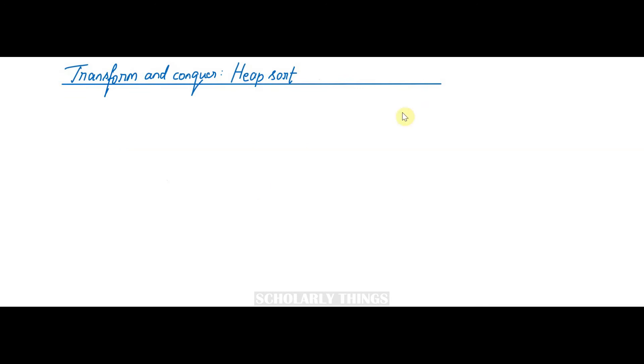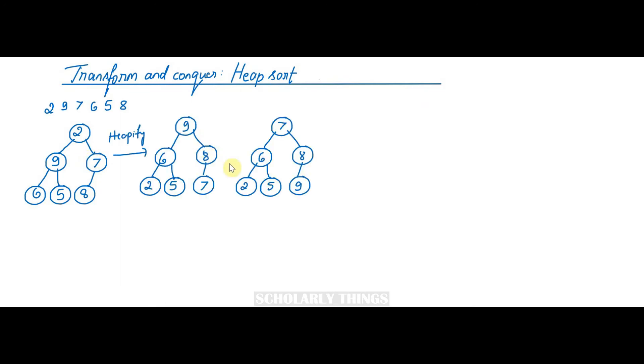Let's see an example for the same. The given array is 2, 9, 7, 6, 5, 8. We need to sort this array using heap sort. First and foremost, let's construct a tree for this array. The tree looks something like this: 2, 9, 7, 6, 5, and then 8. Now this is not a heap, so if I heapify it, the heap looks like this—the parent nodes are greater than their children.